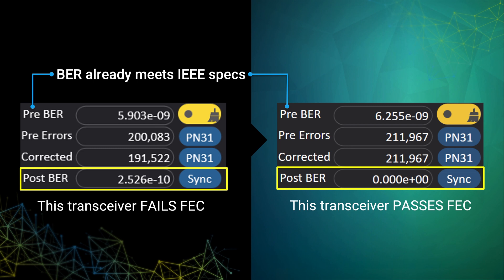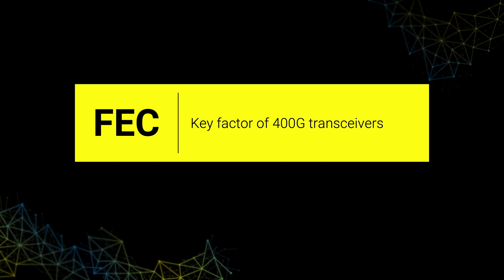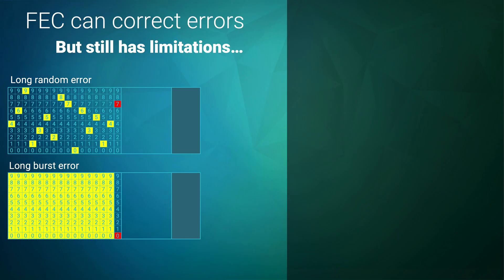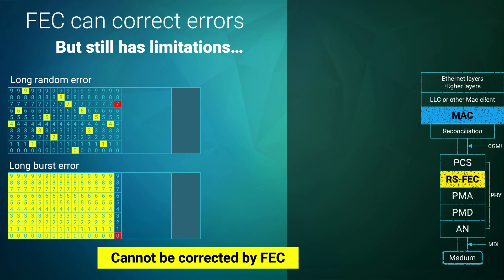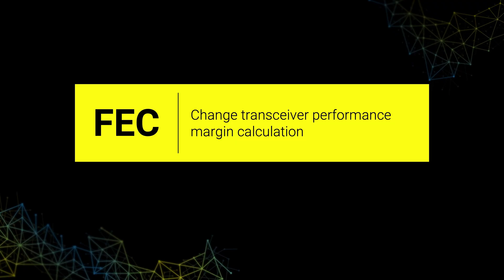Why so? As we know, the 400G standard allows transceivers to have BER using fake Forward Error Correction. FEC will be a key factor of 400G transceiver performance. From the FEC behavior, we can deduce that long burst or long random errors will make FEC uncorrectable. The uncorrectable codewords will deliver errors into the MAC and cause frame loss. So FEC changes our transceiver performance margin calculation.